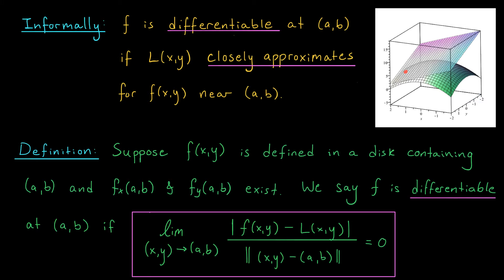The partial derivatives tell us only about the behavior of our function in the x or y directions, and this is no good when talking about differentiability. We need a definition that accounts for our function's behavior in all directions. So informally, we're going to say that our function is differentiable at some point (a, b) if its tangent plane L of x, y closely approximates the values of the function nearby. You can see that at the point (a, b), the tangent plane is very close to the graph of our function. If you zoom in really, really close to that point, the surface will look almost flat — plane-like. Our function is therefore really nice and well-behaved in all directions, and this is what it will mean to be differentiable at the point (a, b).